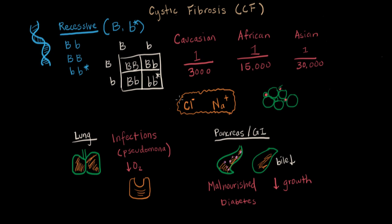You can see how one little gene controlling the transport of two molecules — sodium and chloride — affects the lungs, the pancreas, and really everywhere in the body. Treatments tend to revolve around controlling the symptoms of these problems. There are some symptoms that aren't really treated — for example, since sodium and chloride make salt, their sweat and skin just taste more salty, but that doesn't affect health as much so it's not a primary treatment focus.